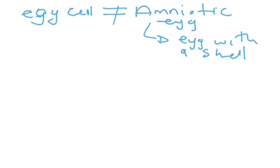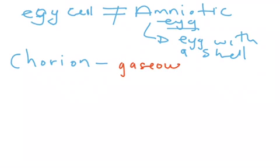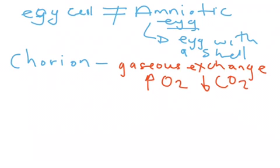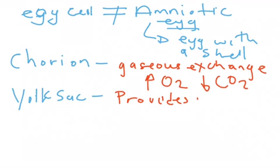The first membrane that we find in the amniotic egg is the chorion. The chorion allows for gaseous exchange, which in essence simply means it allows oxygen to enter and carbon dioxide to leave. The second membrane is the yolk sac, which provides nutrients.